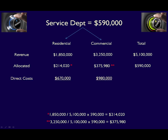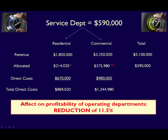Adding the allocated service department costs to each operating department's direct costs gives an updated overhead cost for Residential of $884,020, and an updated overhead cost for Commercial of $1,344,980. Adding these additional costs into each operating department will reduce their profitability by about 11.5%.